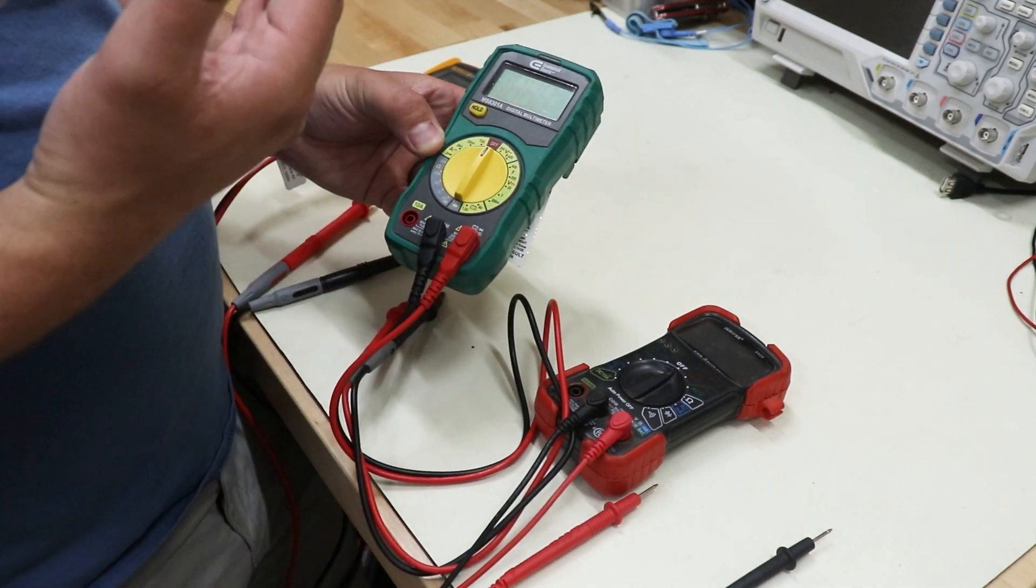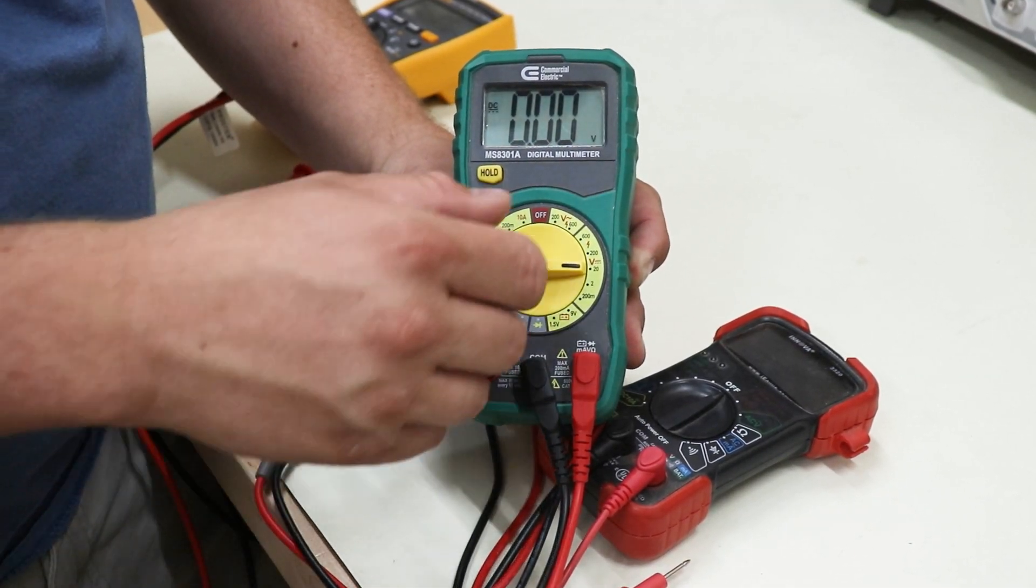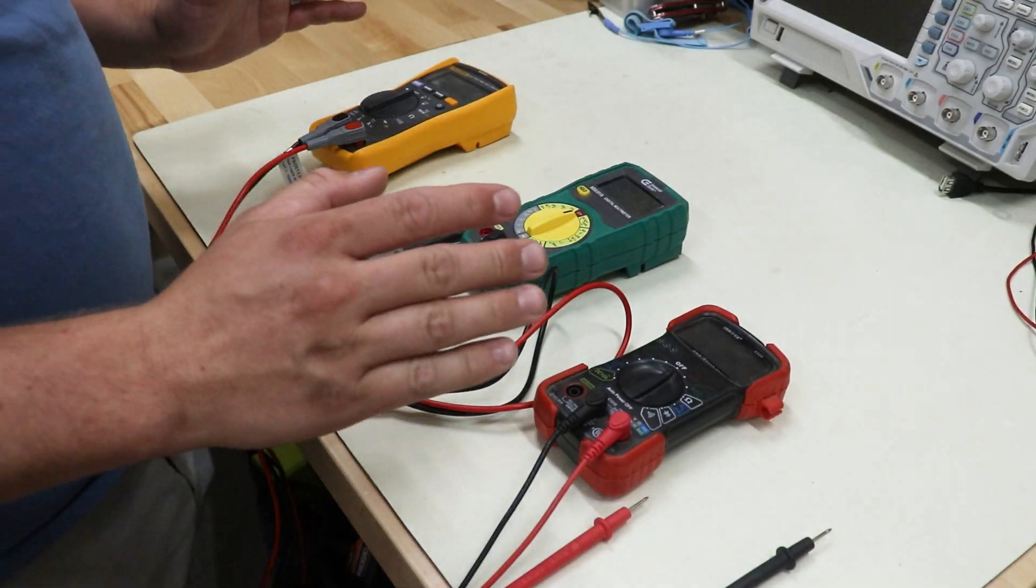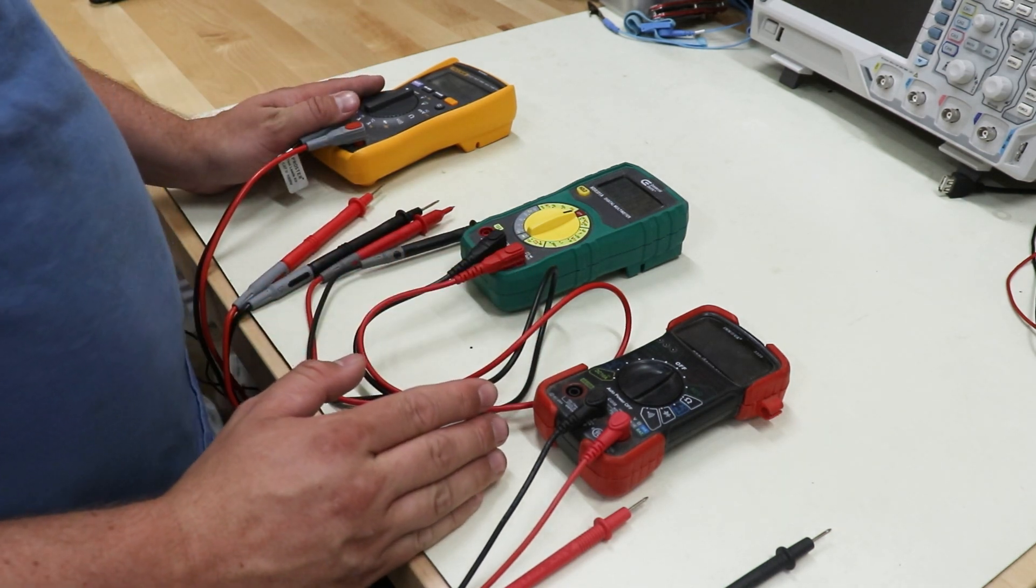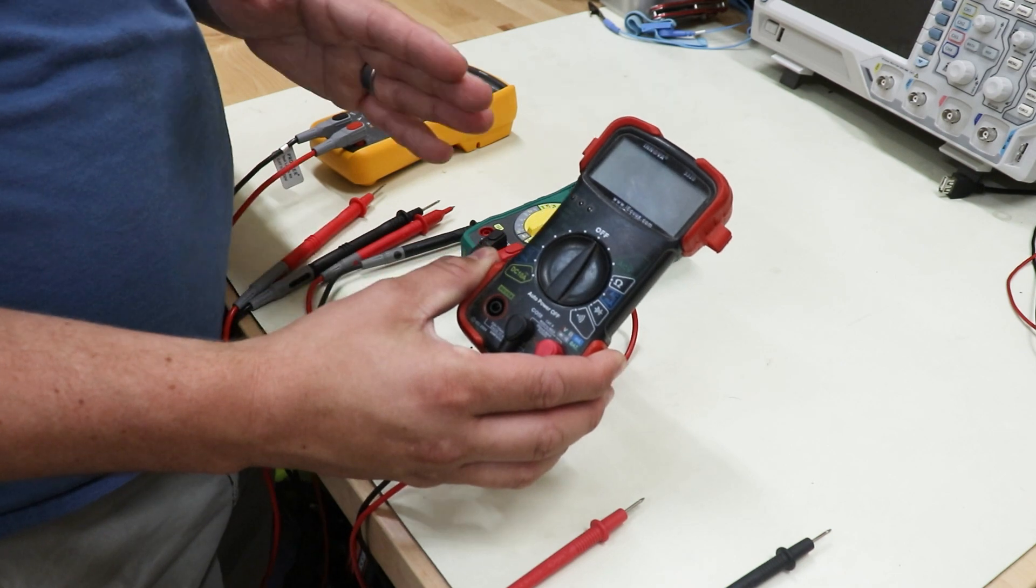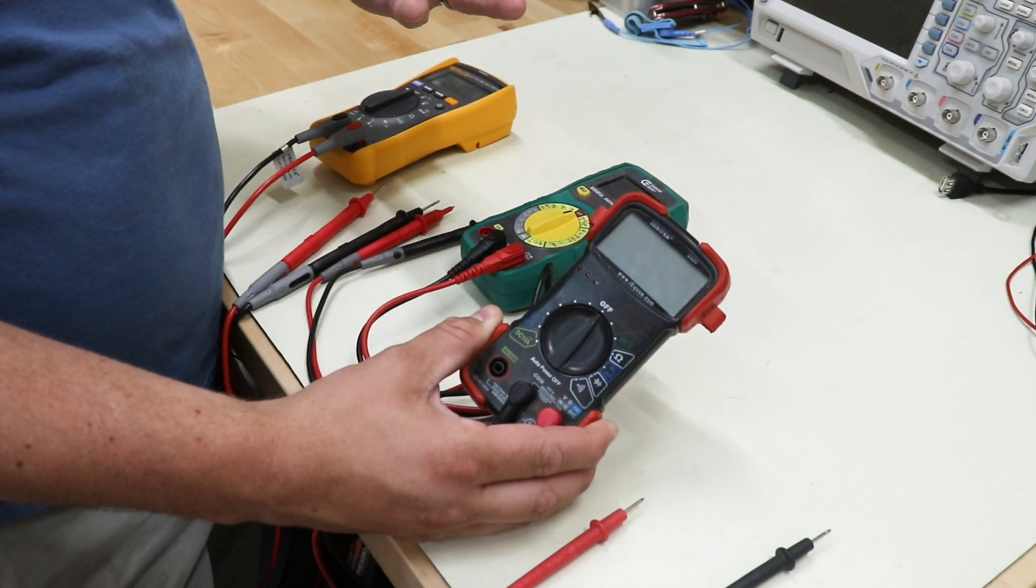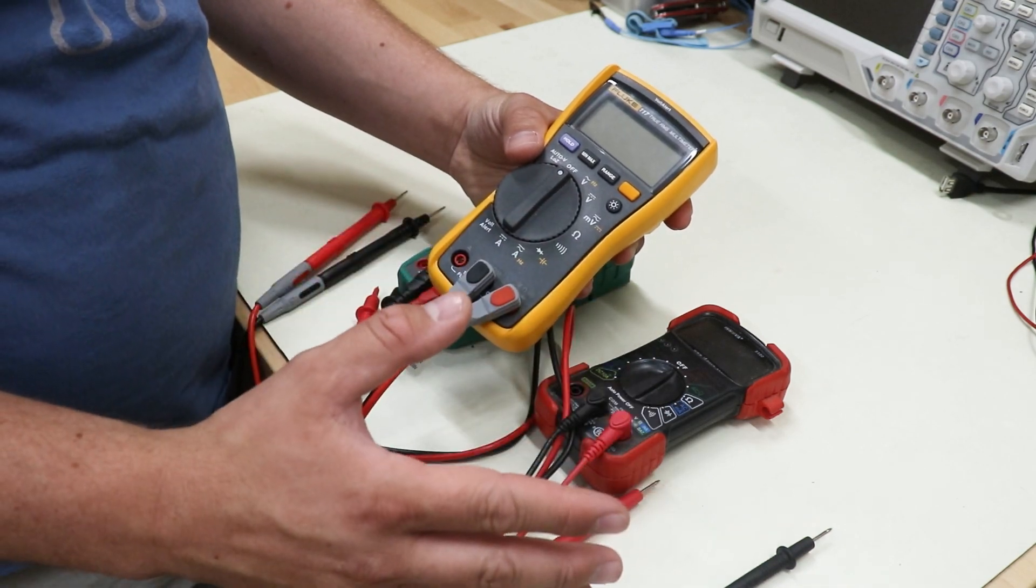Most basic multimeters like this one do not have auto-ranging, which means you have to tell the multimeter what range you want to measure at. On the other hand, other multimeters will do this ranging for you. This is also a very inexpensive and basic multimeter, but it does have auto-ranging in it, so it's not necessarily something that is based on price. In a nutshell, that's what auto-ranging is.